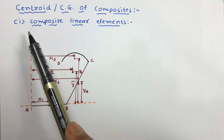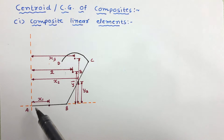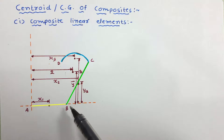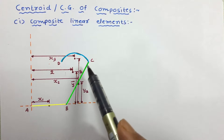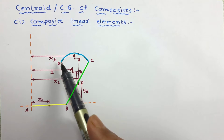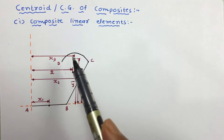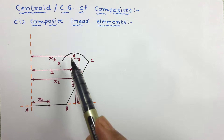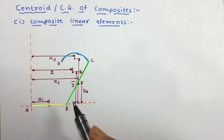Let us start with composite linear element. Here, three wires A-B, B-C, and C-D are connected and make the shape A-B-C-D. This is the linear composite and we need to find the centroid of this element.